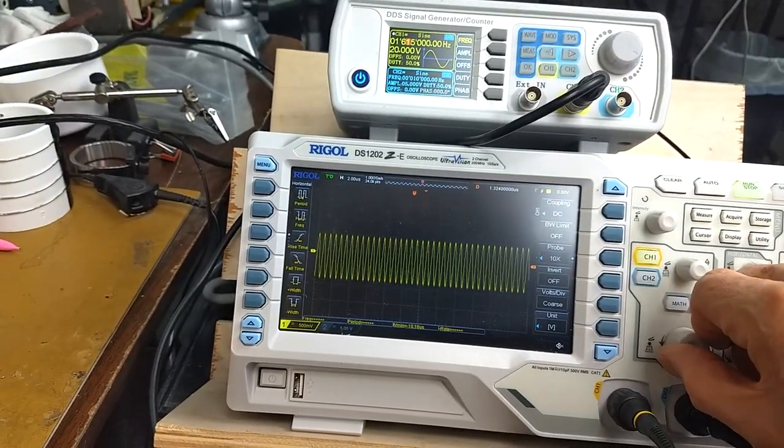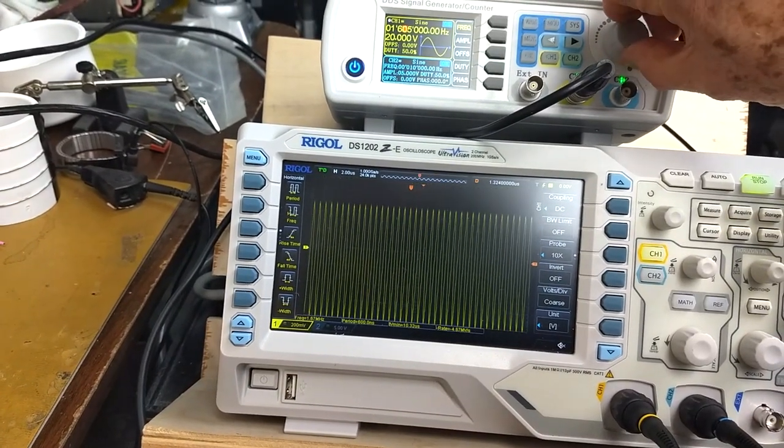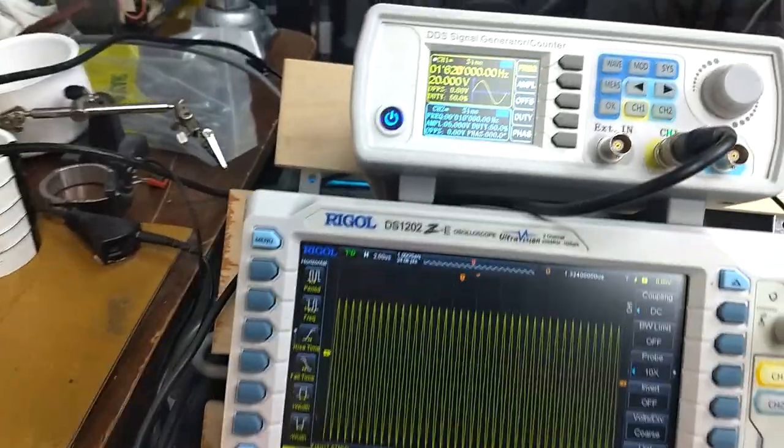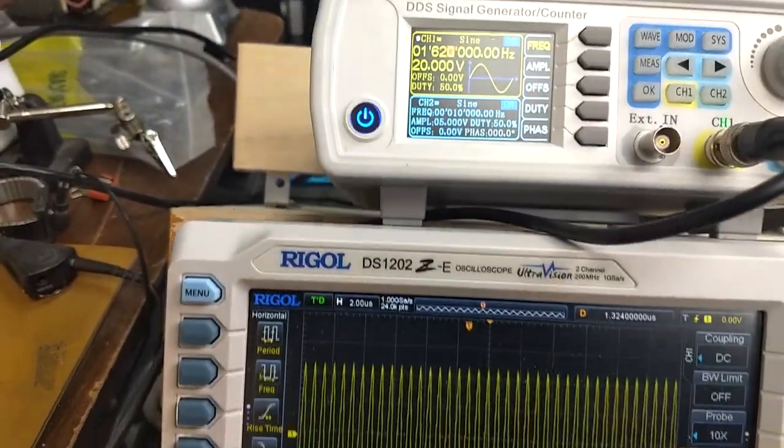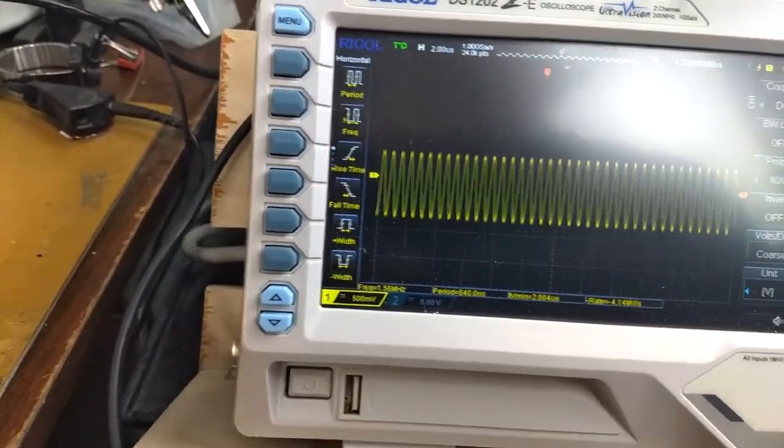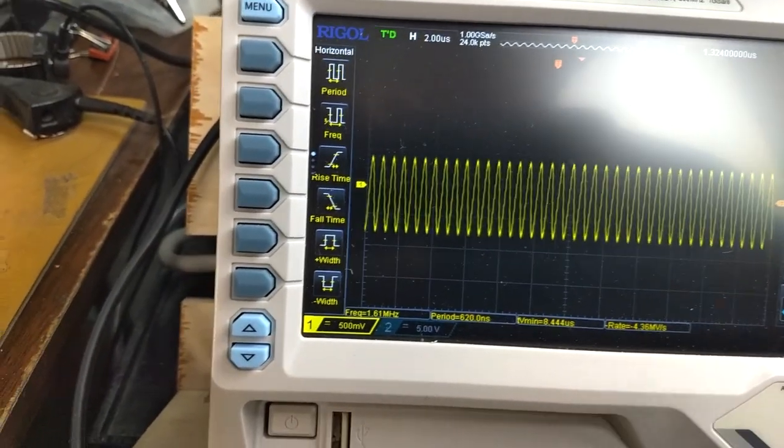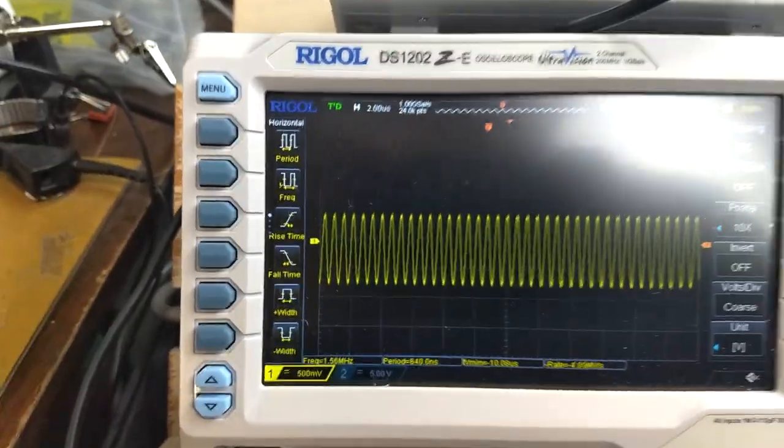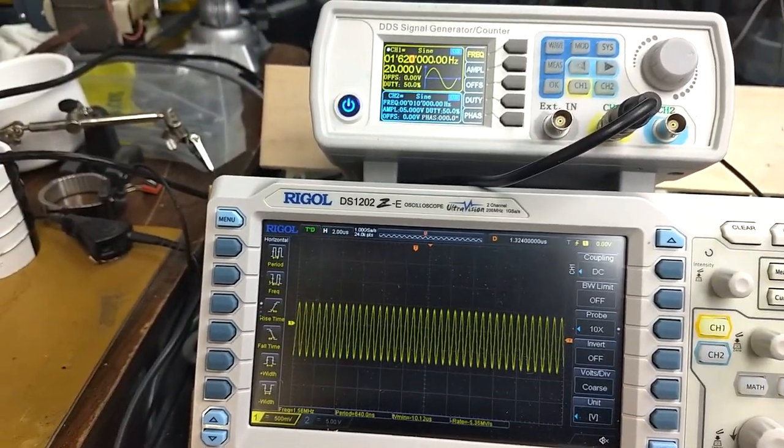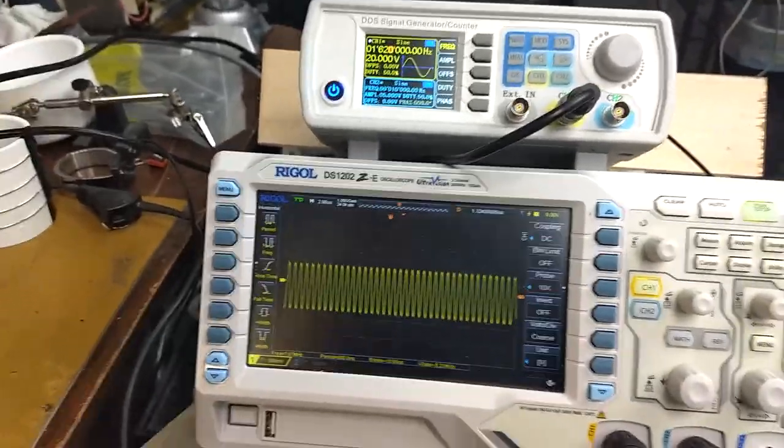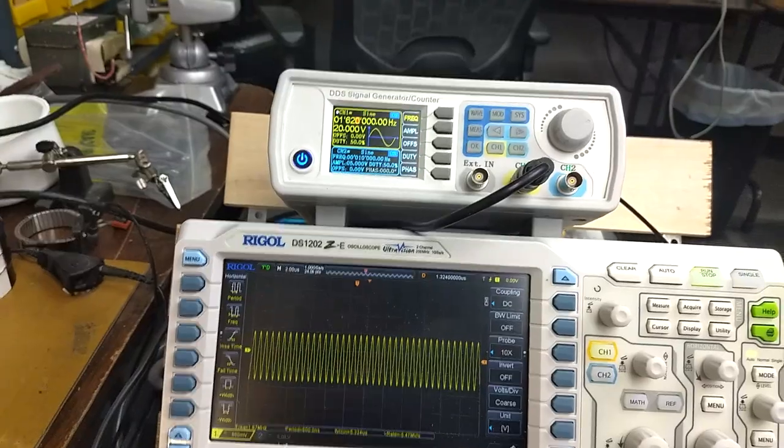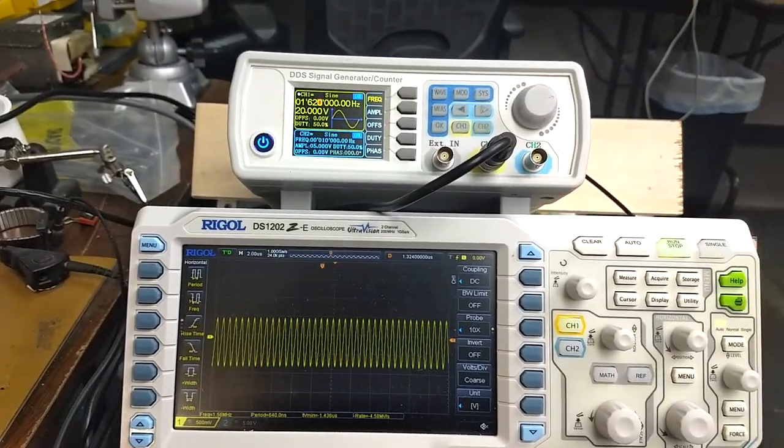There we see another low impedance point at about 1.6 megahertz. Here the voltage is not as low as it was before. That's about 1.5 volts. So this resonant point is a higher impedance than the first resonant point. I found that as I go on up, there are other series resonant points, and each one is at a higher impedance.